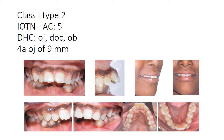Proclined upper incisor and deep bite — so it is Class 1, Type 2. IOTN index grading: the AC component is 5. For the dental health component, there is overjet, displacement of contact, and overbite. We grade based on whichever comes first on the list, and overjet comes first.